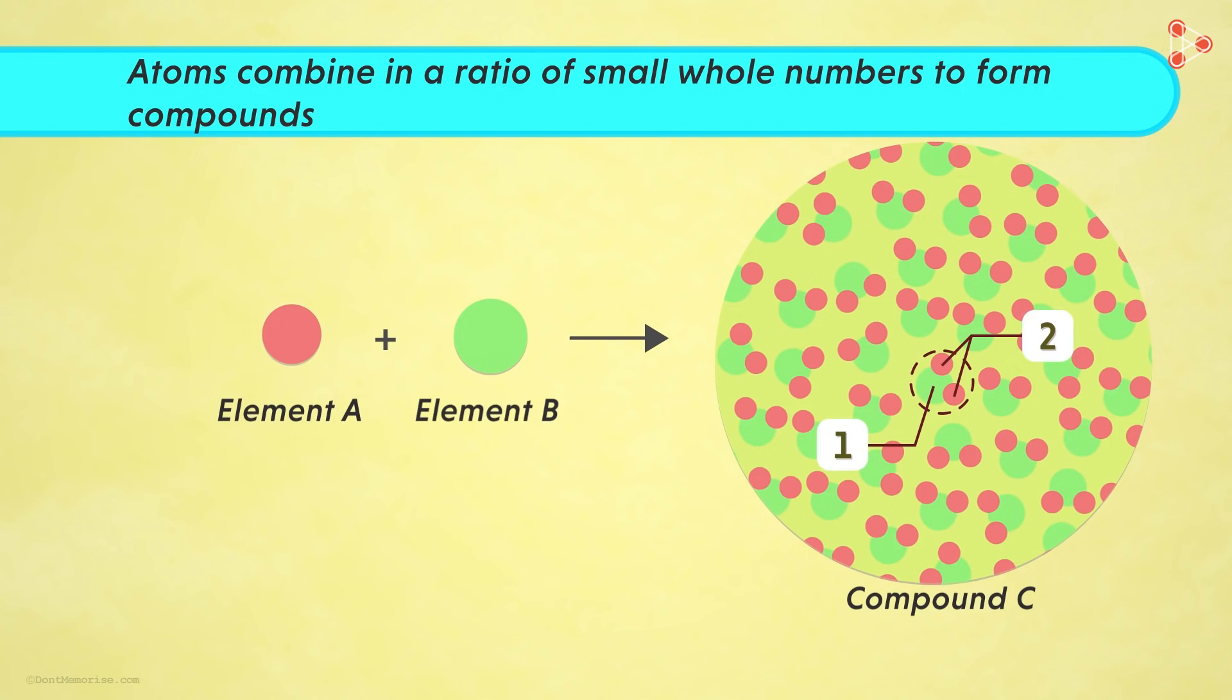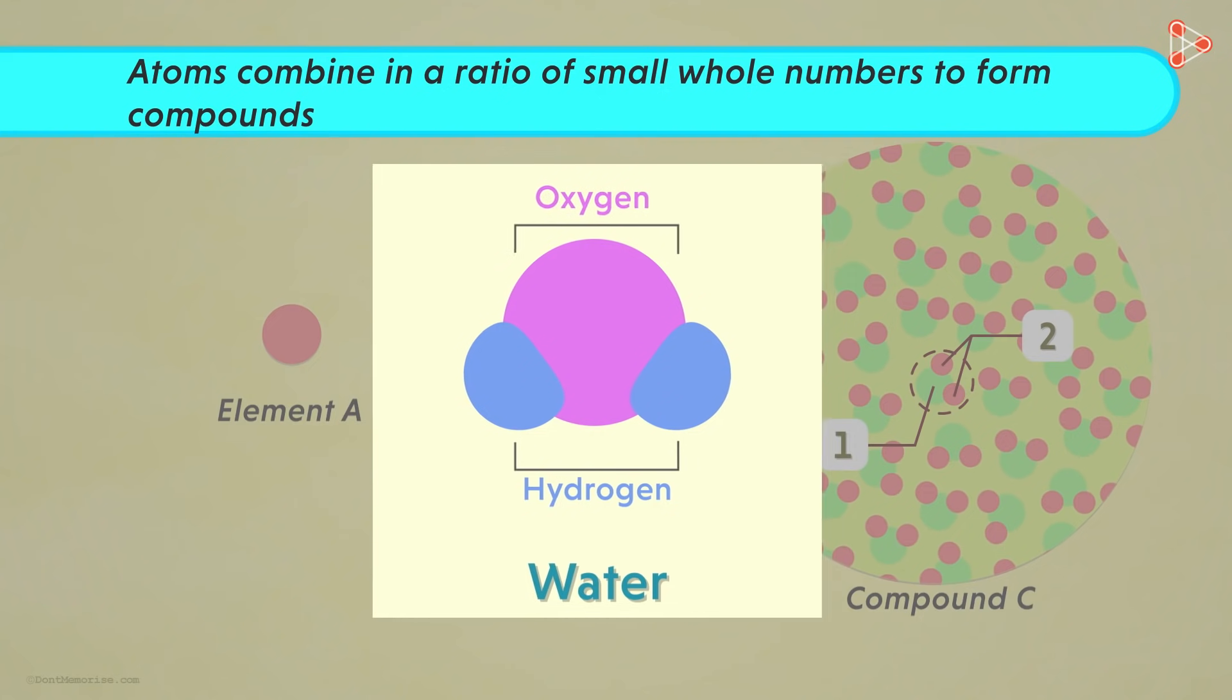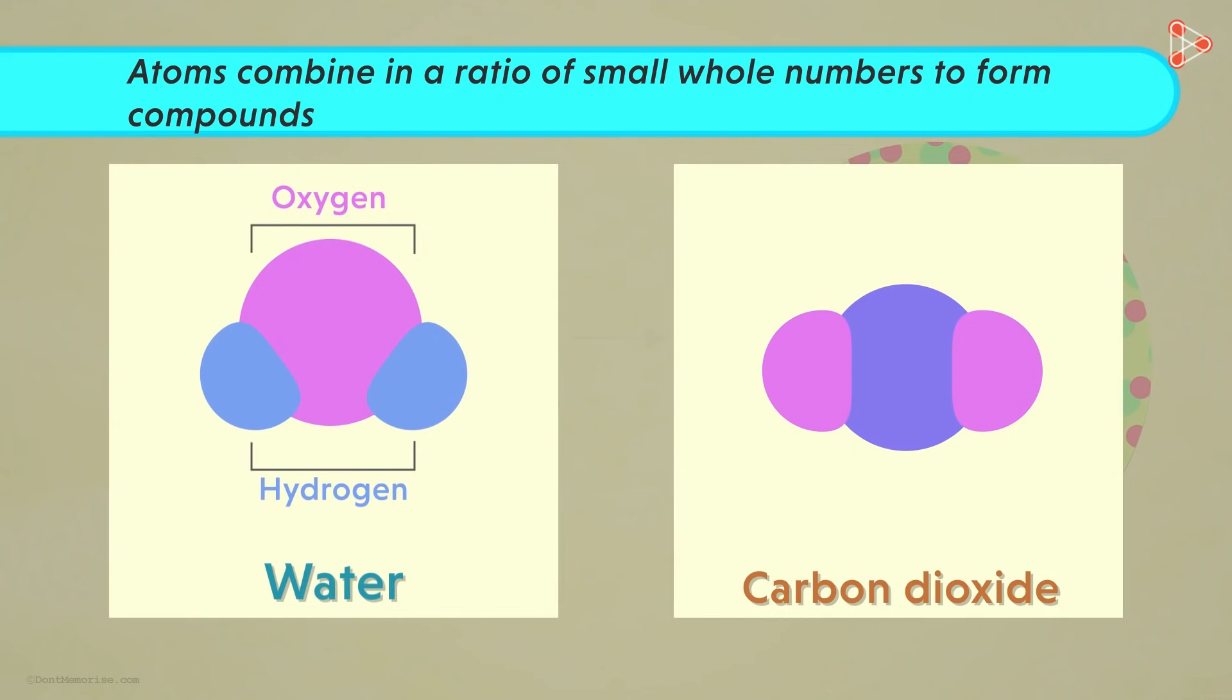Yes! This means that in any compound, the elements are always present in a ratio which comprises of whole numbers. You will not find half or three-fourth atom combining with the other. In case of water, we always have two hydrogen atoms and one oxygen atom combining to form one unit. In one unit of carbon dioxide, we have one carbon and two oxygen atoms. The same holds true for all compounds. The number of atoms of a particular element in a compound will always be a whole number.